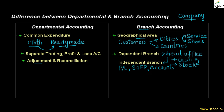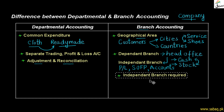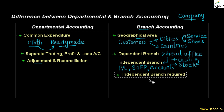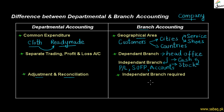For the independent branch, however, because full accounts are being maintained, they will need to be reconciled with the head office. The branch will report how much cash is available, how much sales were made, and all reconciliation accounts will be transferred to the head office. So, adjustments and reconciliation are required for the independent branch.